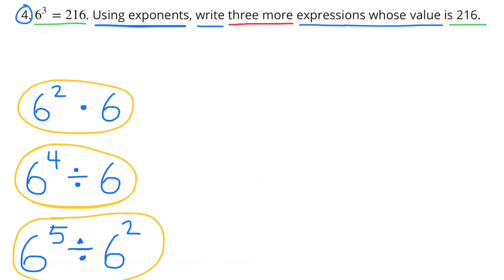Problem 4: 6 to the third power equals 216. Using exponents, write three more expressions whose value is 216. There are many examples, but here are some: 6 to the second power times 6, 6 to the fourth power divided by 6, and 6 to the fifth power divided by 6 to the second power.